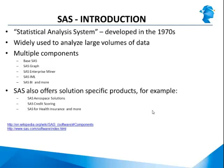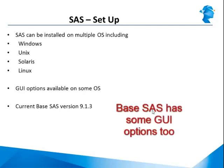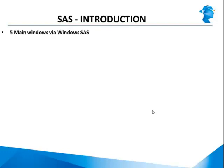In this module we are going to focus on base SAS. The current version of base SAS being used is 9.1.3. SAS can be installed on multiple operating systems including Windows, UNIX, Linux, and Macintosh. We are going to be focusing on SAS installed on Windows. There are GUI options — even base SAS has some GUI abilities — but only on some operating systems. For example, you can import data into SAS using a GUI option available on Windows but not on UNIX.